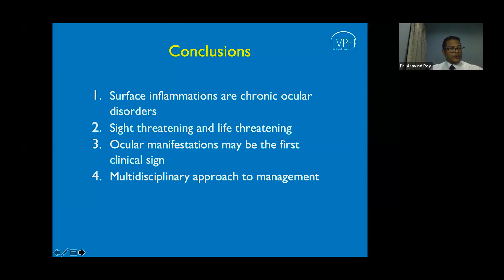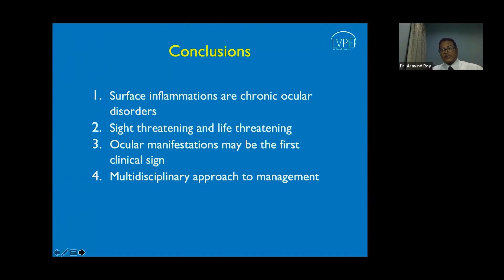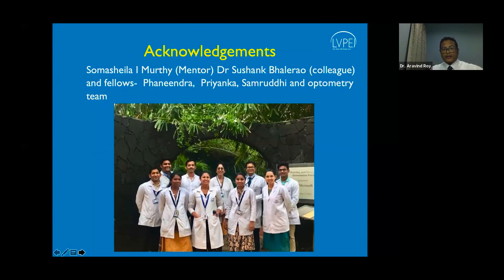In conclusion, scleral and corneal surface inflammations are chronic ocular inflammatory disorders. They are sight-threatening and, due to systemic associations, also life-threatening. The ophthalmologist is uniquely placed as the first point of contact, and it is very important to have a team approach — discussing cases with internists and rheumatologists for a multidisciplinary management strategy. Thank you very much.